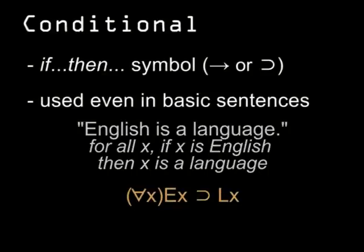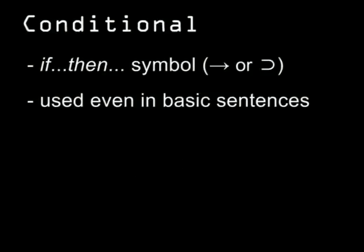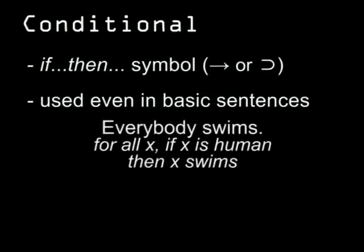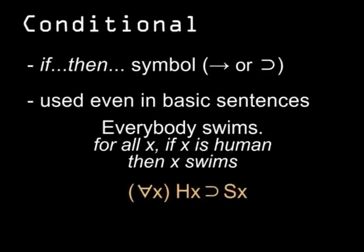Take another sentence: 'everybody swims.' In logic, that's 'for all x, if x is human, then x swims.' There are other popular symbols for this conditional, like the left-to-right arrow. Like the versions of ANDs and NOTs, there are different ways of writing the same symbol, but the logic is the same.